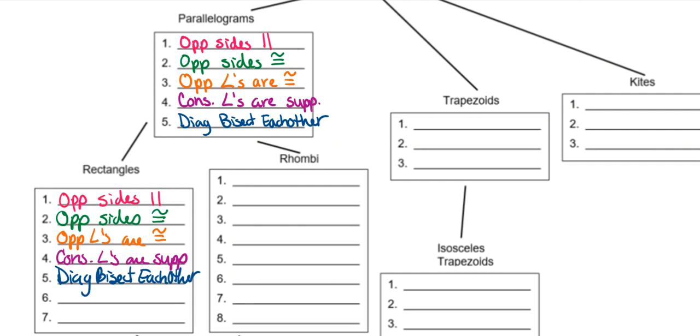So we have that the opposite sides are parallel, that the opposite sides are congruent, that the opposite angles are congruent, that consecutive angles are supplementary, and that diagonals bisect each other.